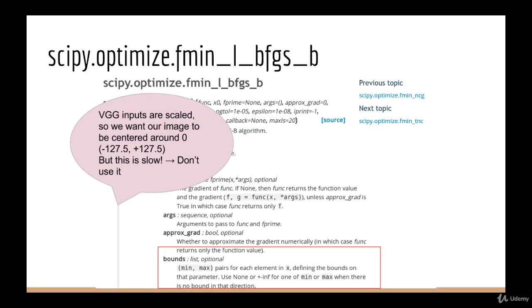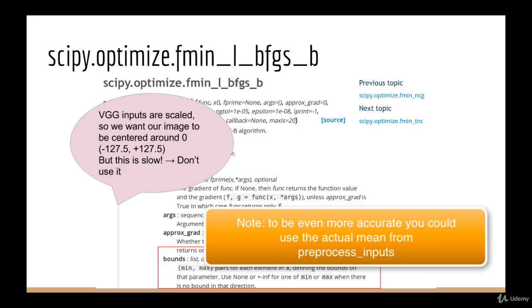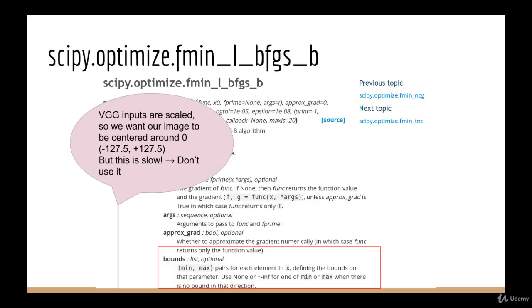The next possibly interesting argument is bounds. This allows us to specify a min and max value for x. We want to bound x because we know that image pixel values have to be from 0 to 255. Since VGG inputs are scaled and centered around the mean, that just means we want to be between minus 127.5 and plus 127.5. Unfortunately, setting this argument also makes the algorithm run much slower, so we're just not going to use it. Instead, we'll just truncate the value of x that we get each time the function is called.